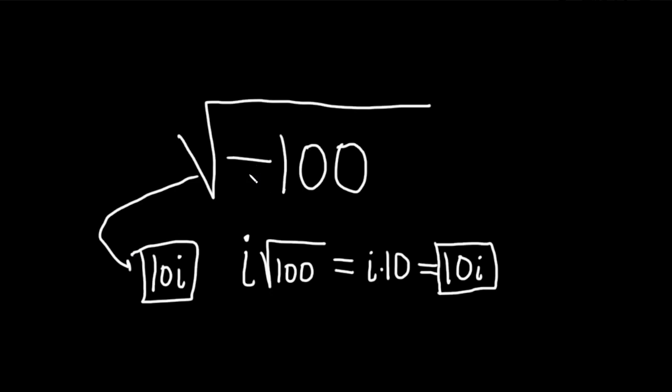And that's much faster, right? You see the negative, you know you have an i. The square root of 100 is 10. So this is just 10i. Much faster than going through all of the work here. And eventually, that's how you want to be able to do it. Good luck.